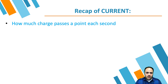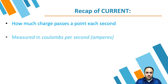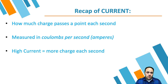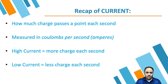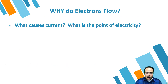A little recap on current: we know that current is how much charge passes a point each second, measured in coulombs per second. One coulomb per second is one ampere, or one amp. High current means more charge per second flows by; low current means less. But what exactly causes electrons to flow, and what's the whole point of this electricity business anyway?